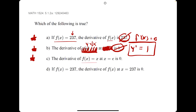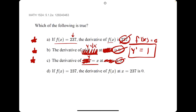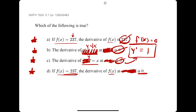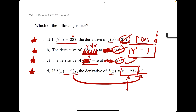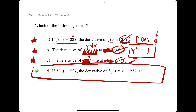Statement D says: if f of x equals 237, the derivative of f of x is 0. All they're saying is that the derivative of 237 is 0 — and that is true, because the derivative of a constant is 0. They could have said any x value here and this would still be true; it doesn't matter the x value. It's about the derivative of 237 being 0. So D is the correct true statement.